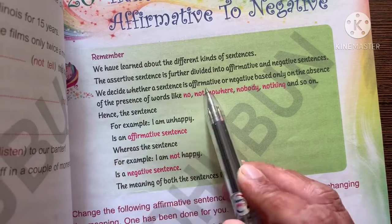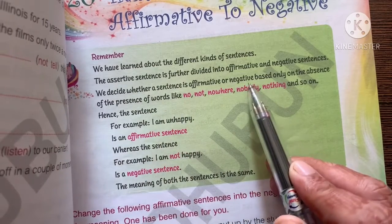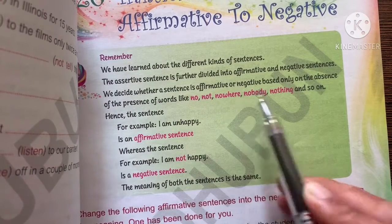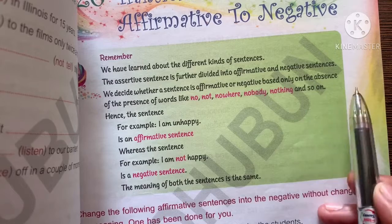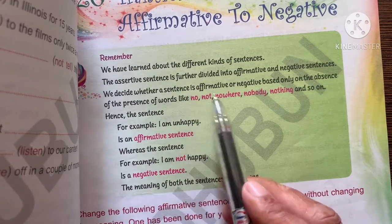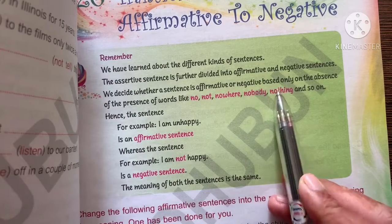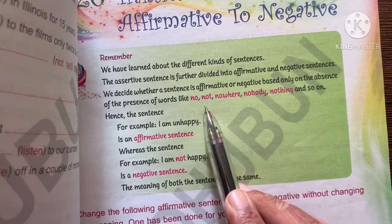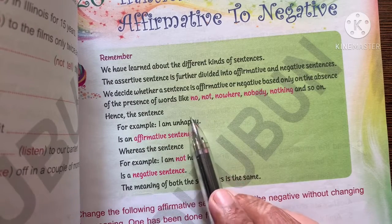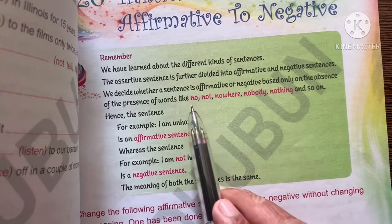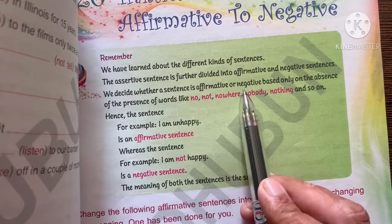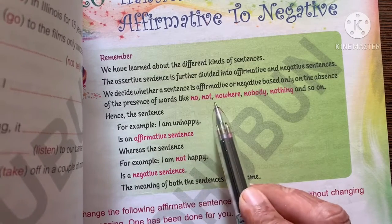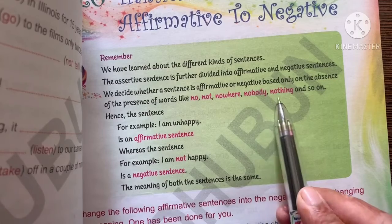We decide whether a sentence is affirmative or negative based on the absence or presence of words like no, not, nowhere, nobody, nothing, and so on. If a sentence is negative, which words are used in it? No, not, nowhere, nobody, nothing, and so on.